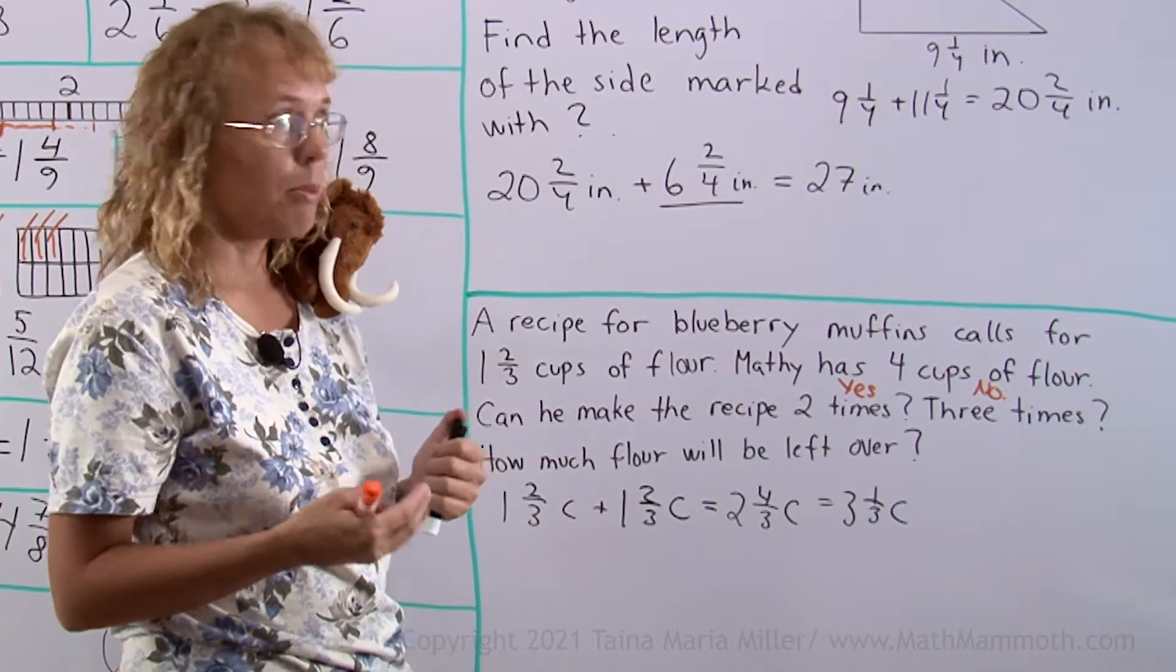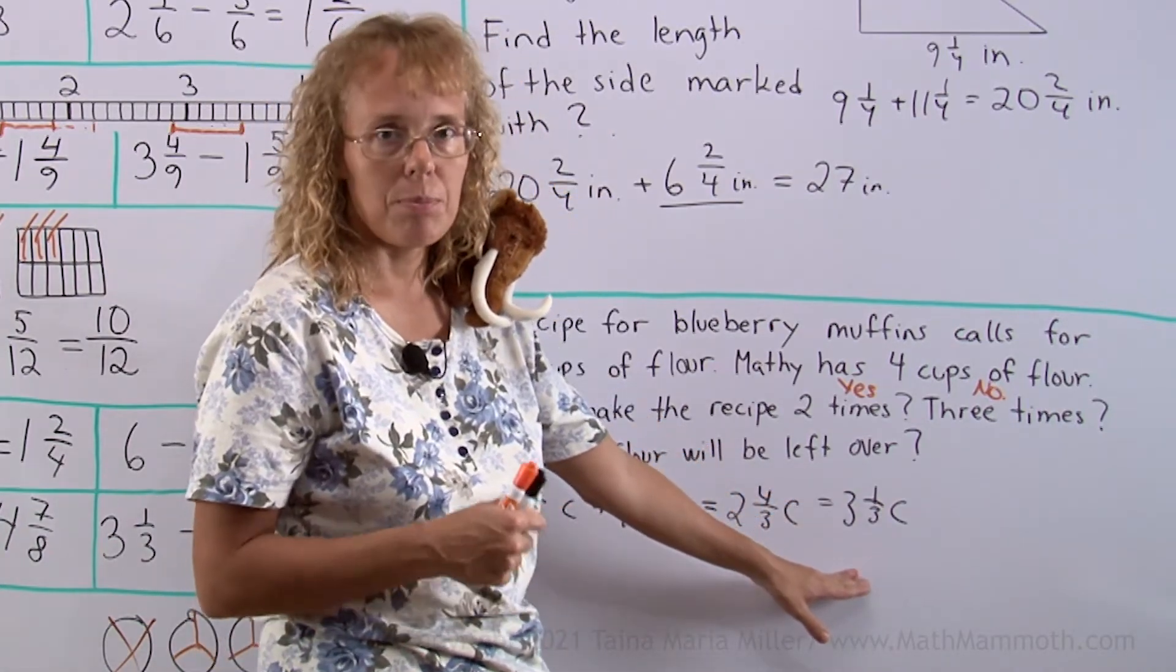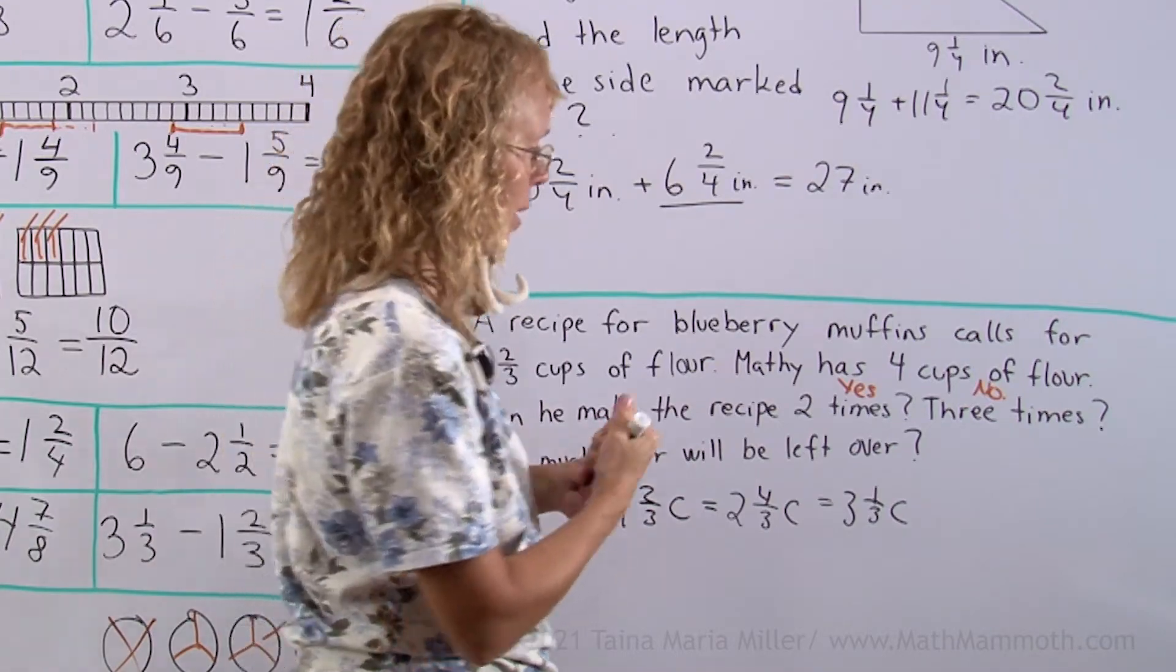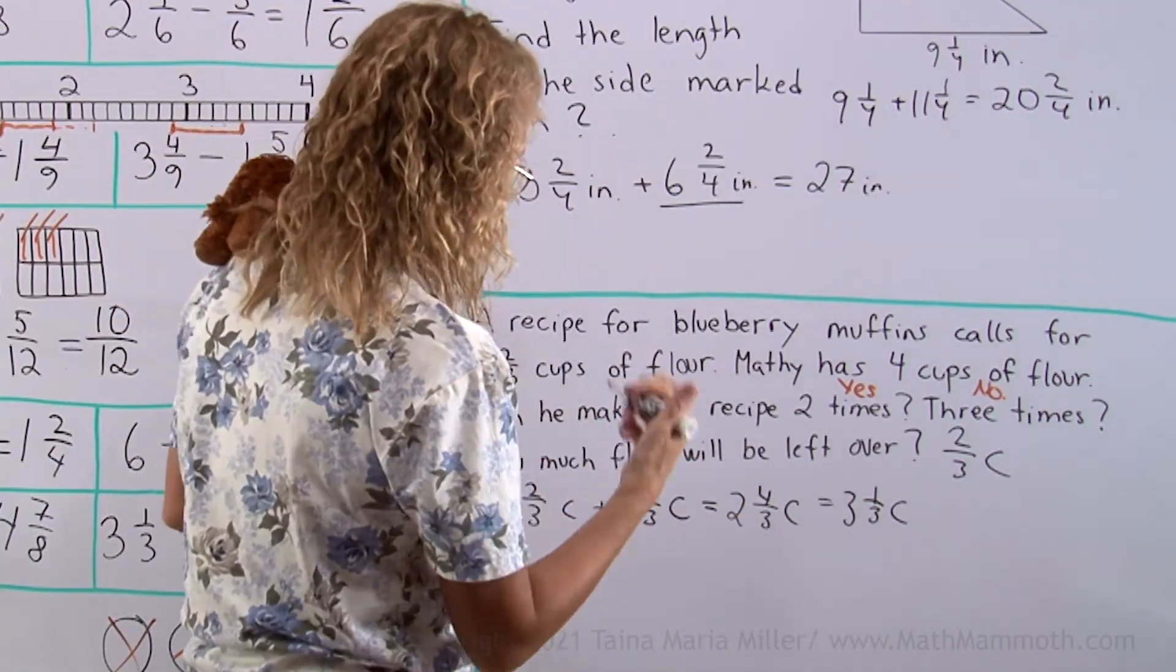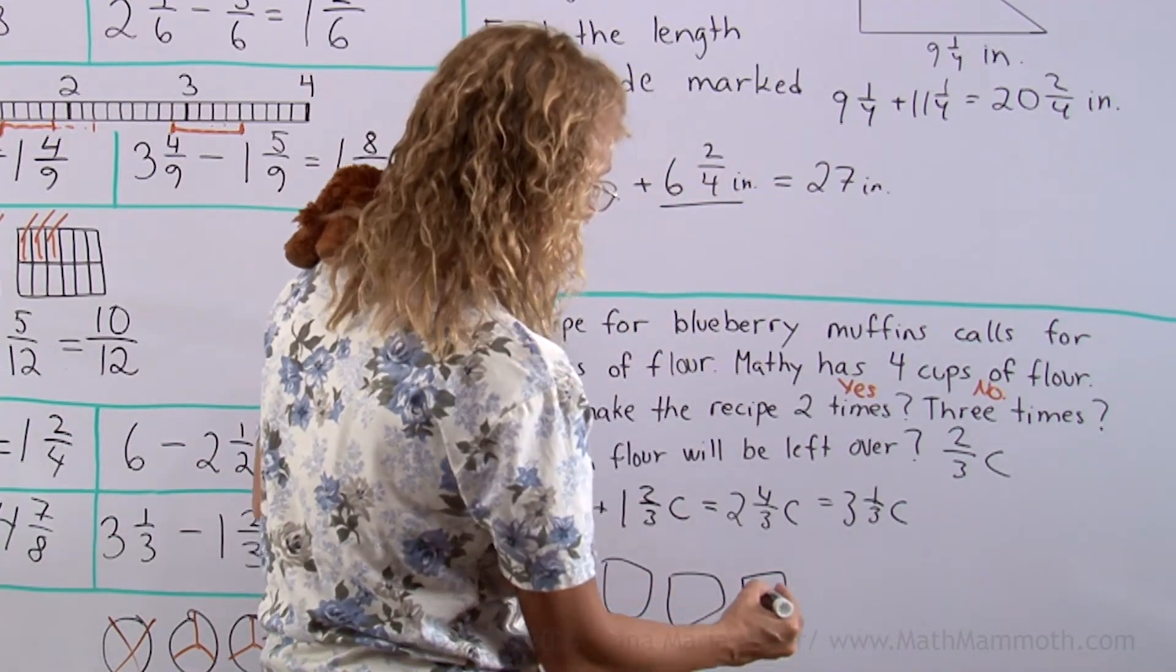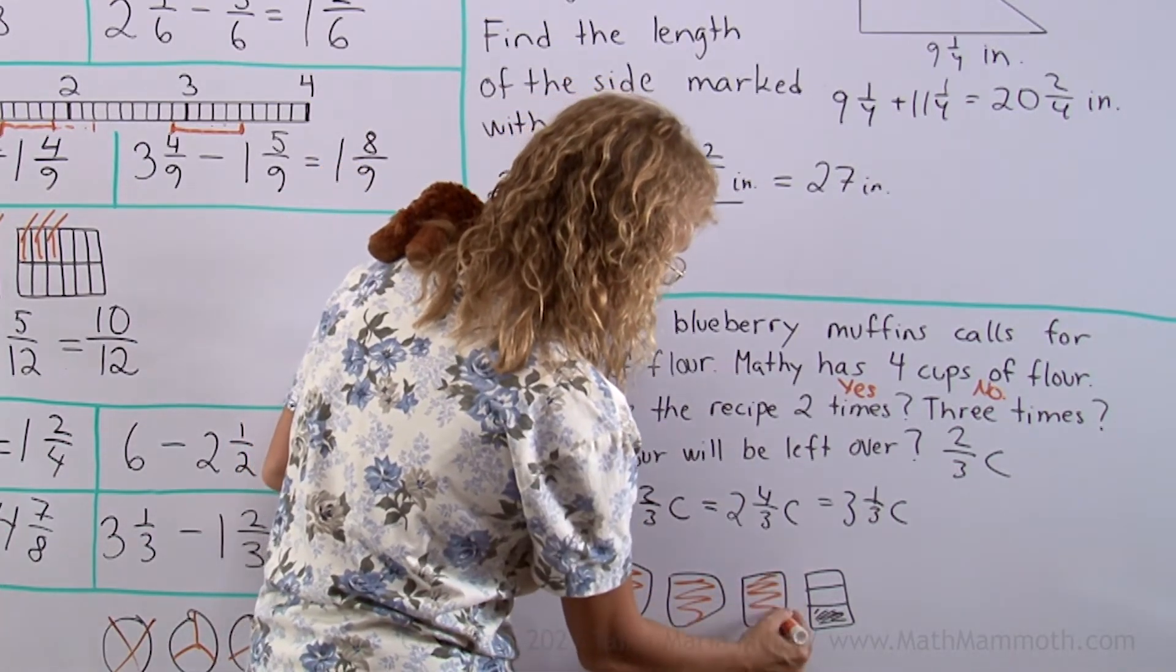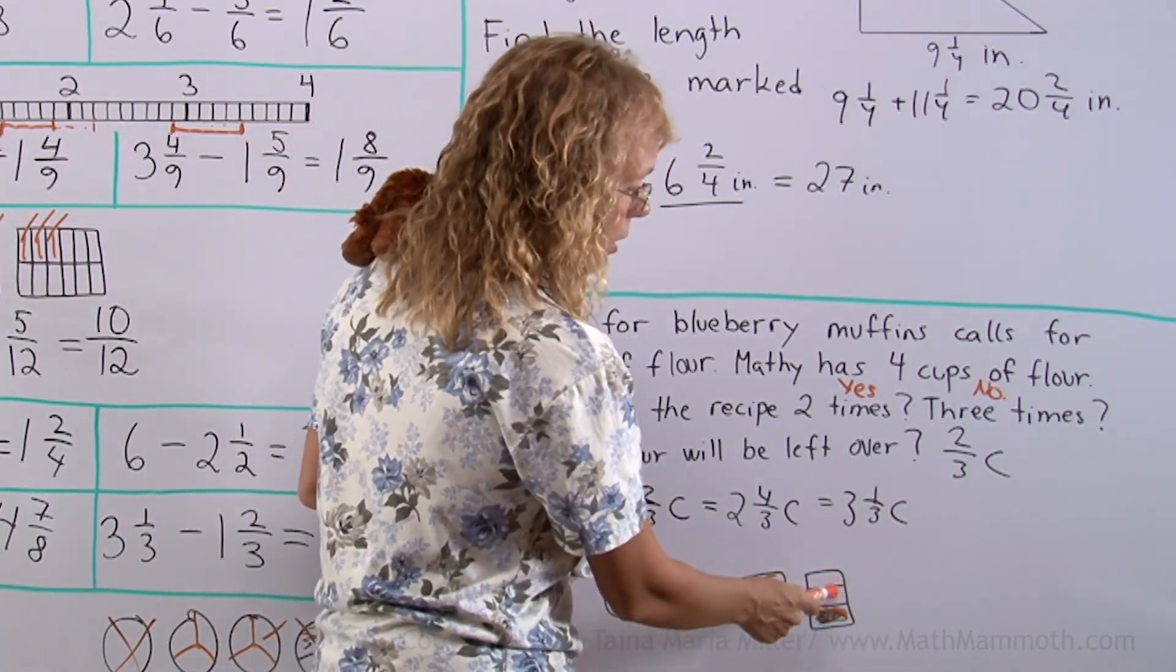How much flour will be left over if he now makes the recipe two times? Well, I already added this, and I got that for two times the recipe, he uses 3 and 1/3 cups of flour. And he has 4 cups of flour. So what's the difference between those two? 3 and 1/3 and 4 cups? What's the difference? I hope you can see, it is fairly easy. It is 2/3 of a cup, right? But if you cannot see it, then draw this. Either with the pies or whatever you want to use. I'm gonna use something that looks like cups maybe. There's a cup of flour, another cup of flour, a third cup of flour. Then the 1/3 cup of flour I would have to draw here. Okay, this here is the third of a cup, right? Let's color this in. One cup, two cups, three cups of flour and a third of a cup of flour. Okay, how much is the difference between this and four full cups? It's just this here, two-thirds of a cup. Okay, I hope this helps.